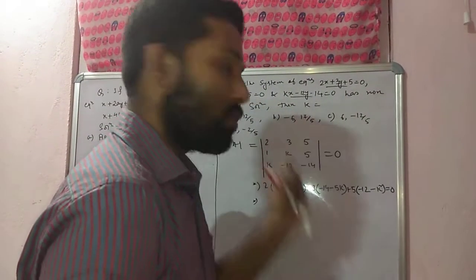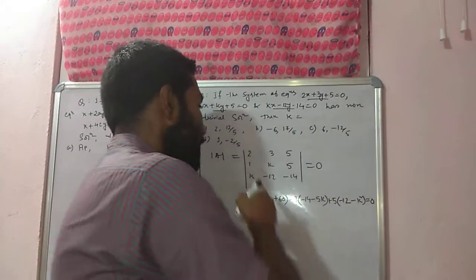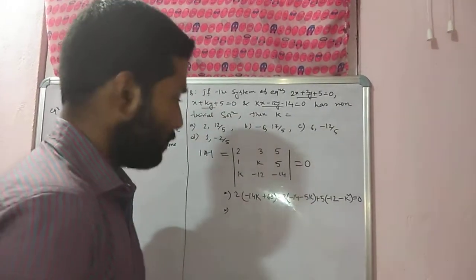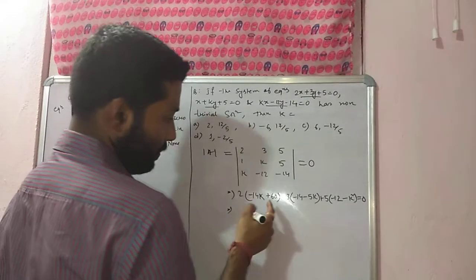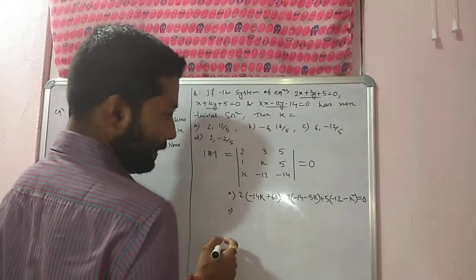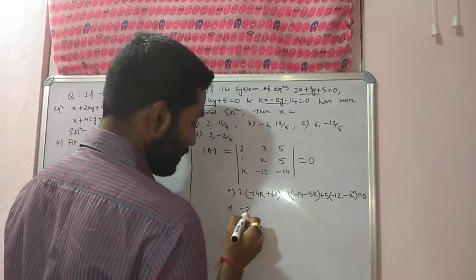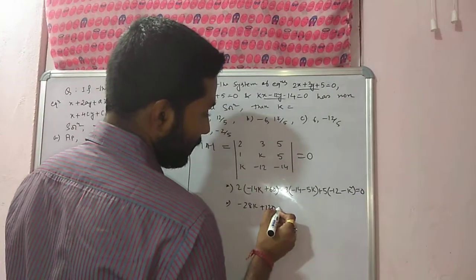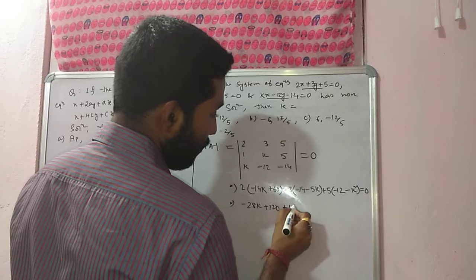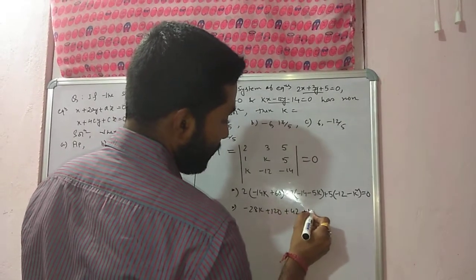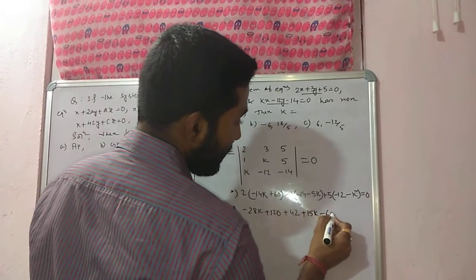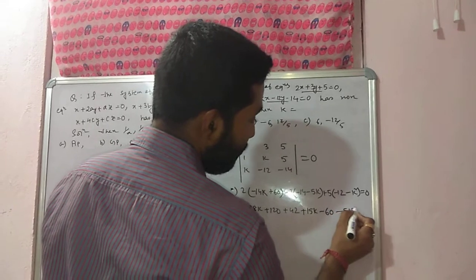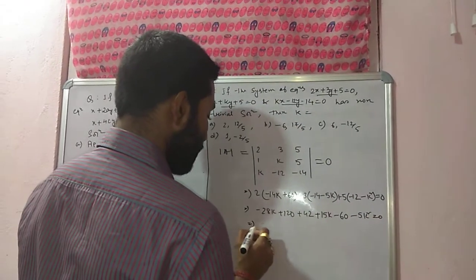Let us expand it along row-wise, first row. I have expanded along first row. If I calculate it, it will be minus 28k plus 120 plus 42 plus 15k minus 60 minus 5k square.